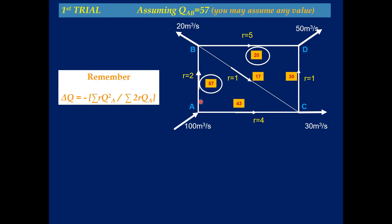For the first trial, I am assuming that the flow discharge in pipeline AB is 57 m³/s. The principle of this method says that inputs are known but not the inner flows. We divide this pipe network ABCDA into two loops: loop ABC and loop BDC. Since 100 m³/s is coming into junction A and pipeline AB carries 57, the remaining 43 m³/s will go in pipeline AC (100 minus 57 = 43).